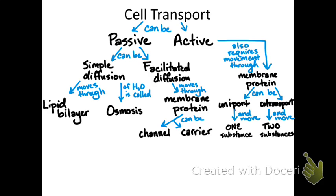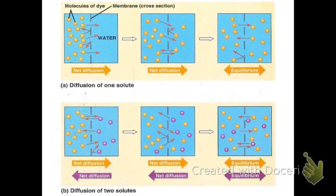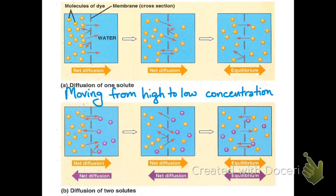This part of the lesson covers passive transport. When looking at simple diffusion, we see one or two solutes diffusing, but always moving from high to low concentration. Random movement of molecules will always result in an eventual equilibrium state. Equilibrium does not mean the molecules have stopped moving — it means they are moving equally in both directions, so there is no net movement, but there is still movement.